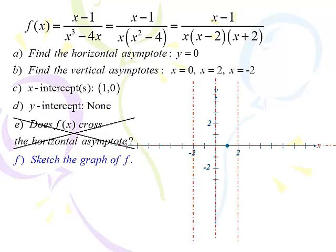Let's sketch it out. I dotted in the x-axis, the y-axis, and x equals negative 2 and x equals 2 as asymptotes. One x-intercept at (1, 0) and no y-intercept. Now for the four regions — in each one, are we above or below? I don't know yet for any of them. We're going to set up a sign chart. It's quick and easy.